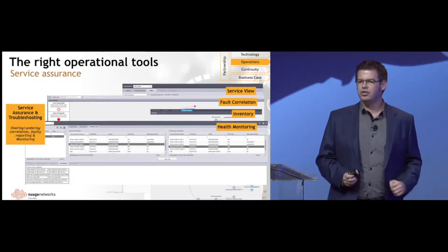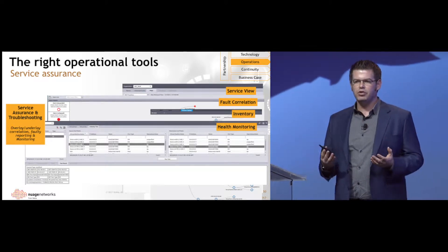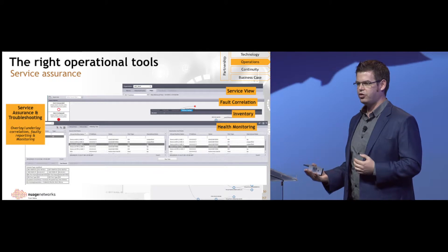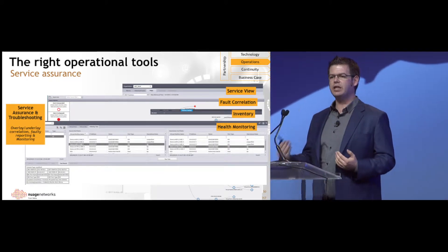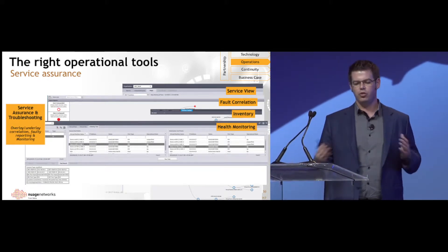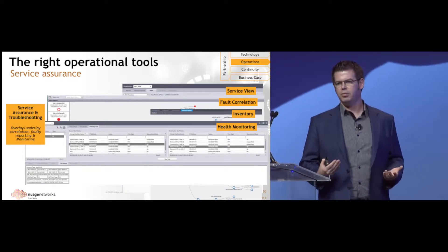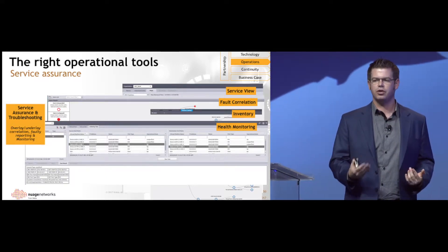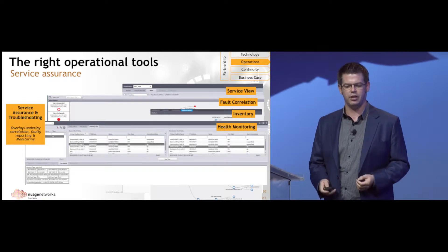That allows us to do things like fault correlation. What happens if a port goes down? What happens if a switch or a router fails? What's the impact on the overlay service? Why did the overlay with its own performance monitoring choose to switch a path in the night? Well, it could have been because there was a fiber cut or a router taken out of service for maintenance. We can go back in time and identify this.